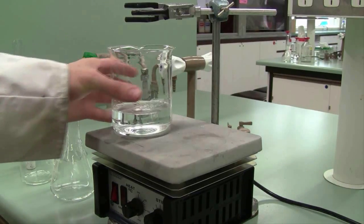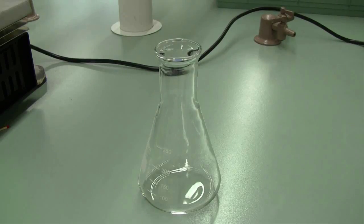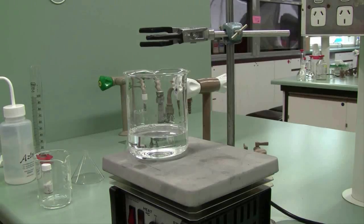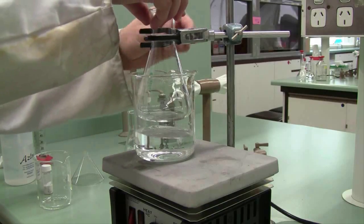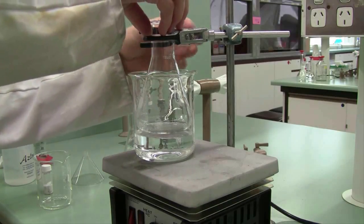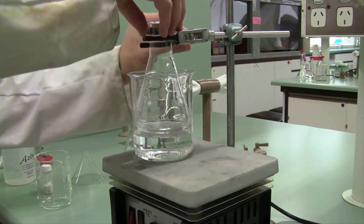Take a beaker of water, doesn't matter exactly how much is in there, and place it on the hot plate under a clamp. Take a conical flask and suspend that above the beaker. It should be just above the water level.